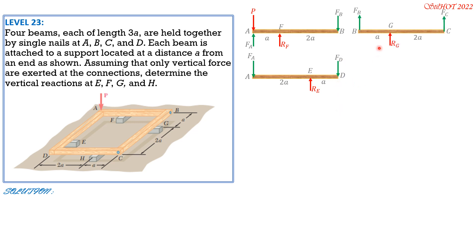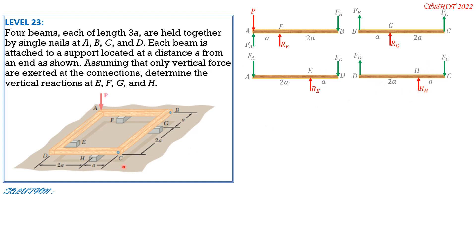For beam BGC: B, G, C with reaction R_G upward. By action-reaction, F_B is downward here and F_C is assumed upward. For beam DHC: F_D is downward on AED so it is upward on DHC. Reaction R_H is upward. Distance from D to H is A, then 2A. Since F_C is upward on CGH, it is downward on DHC. These are the free body diagrams of all four beams, with forces correctly applied by the action-reaction principle.